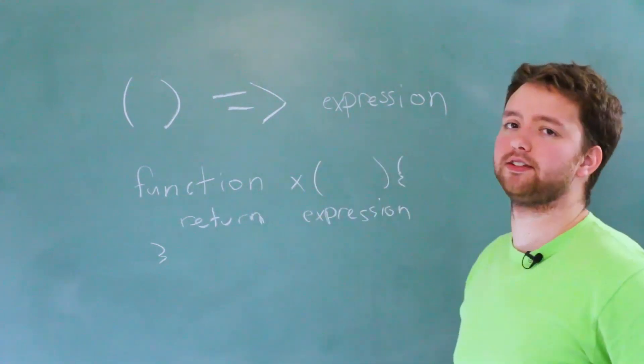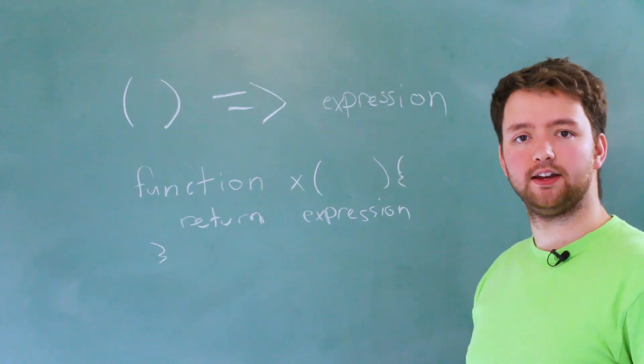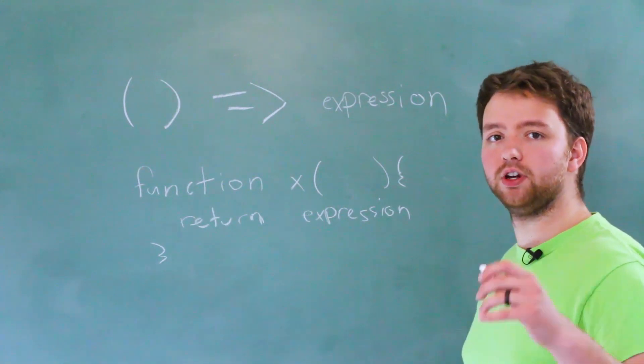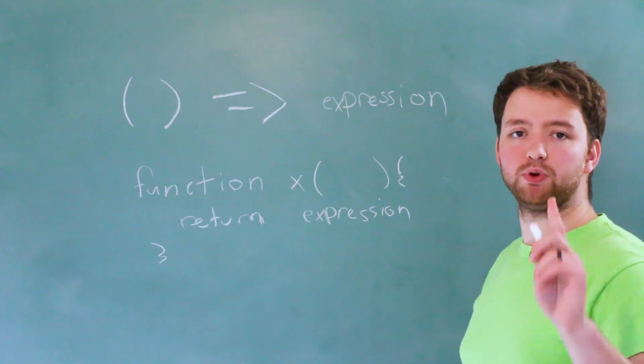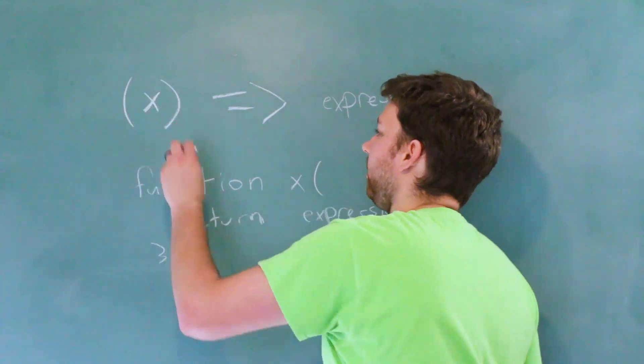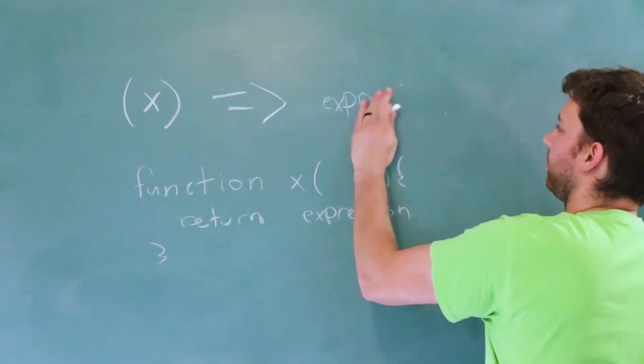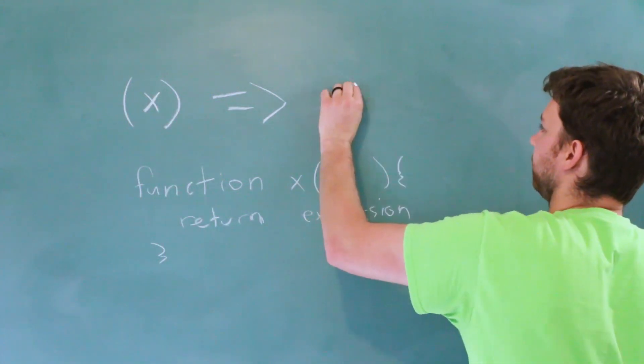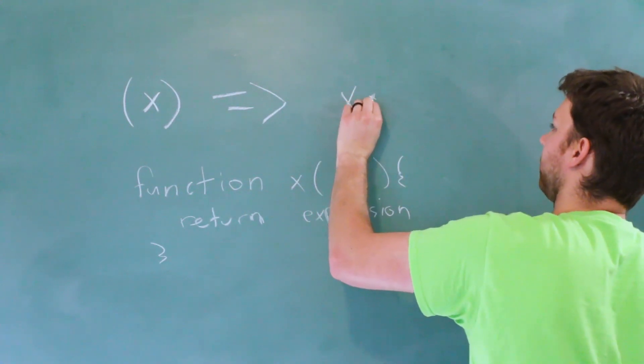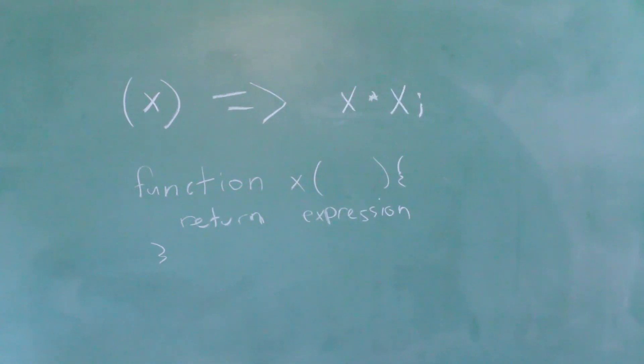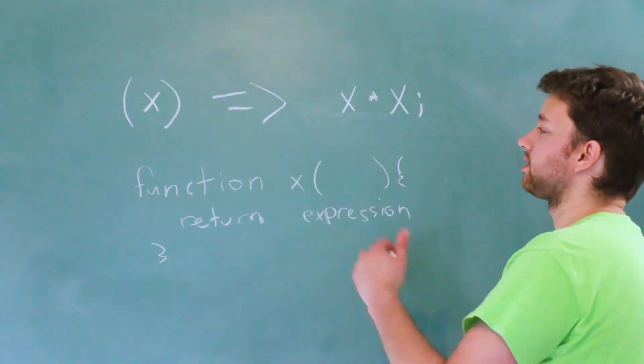So overall it's just a lot less typing, very concise. Now there are a couple variations. For example, if you want to have a parameter—for example x—and then in this situation what we can do is let's just say we want to return x squared, so it might look something like this.